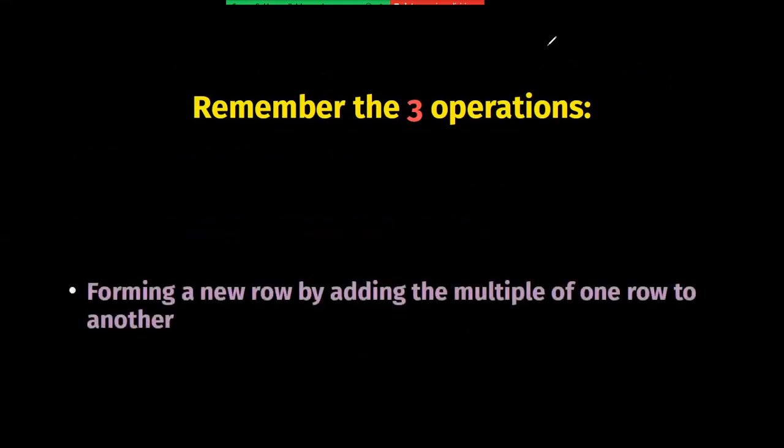In order to transform our matrix into a row echelon matrix, we are only allowed to use the following three operations. We can interchange two rows. We can multiply a row by a scalar different from zero. And finally we can sum up one row with a multiple of another row.